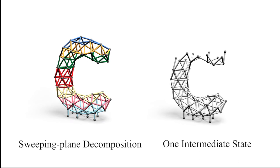The trivial decomposition method, like the sweeping plane method, may result in unstable intermediate states. This is because this algorithm only considers height without considering structural stability or potential collisions.